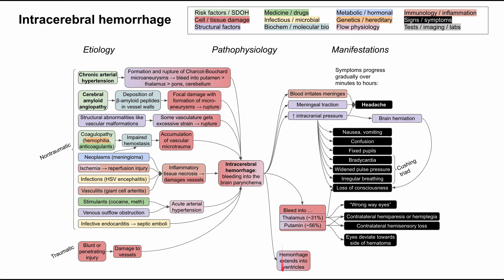Lastly, the hemorrhage can extend into the ventricles of the brain, resulting in hydrocephalus, where high volume in the ventricles exacerbates the other manifestations of intracerebral hemorrhage. This has been a short mechanism of disease map. I hope this was helpful — thank you for listening.